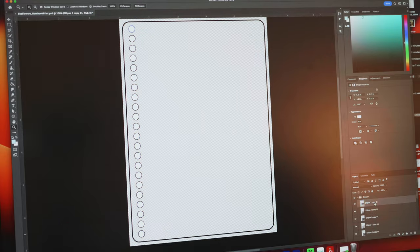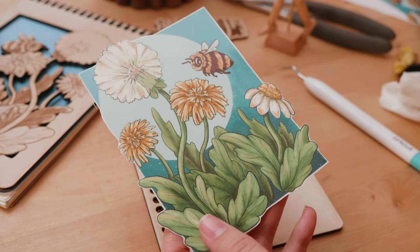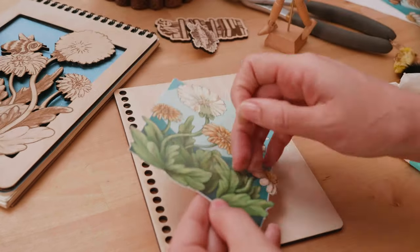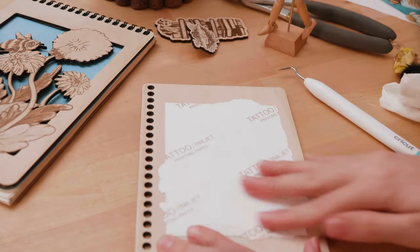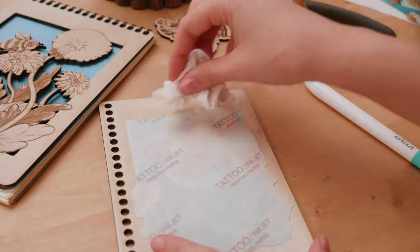So far, the notebooks are the things that have taken the longest to make, but it's only because of setting up the file, which is really just a one-time thing. So with a binding machine, I really don't think it would take long to make these notebooks at all.